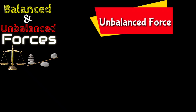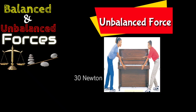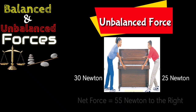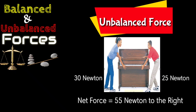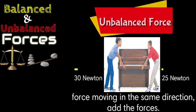Another example: a girl pushes 30 Newtons to the right and a boy pulls 25 Newtons to the right. The net force here will be 55 Newtons to the right. Why 55 Newtons to the right? It is because if the forces are moving in the same direction, all you have to do is add the forces. And since the piano moves to the right, therefore the direction will be to the right.